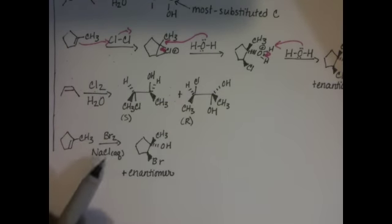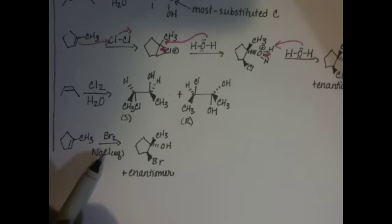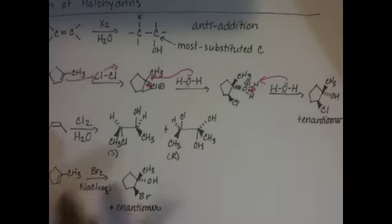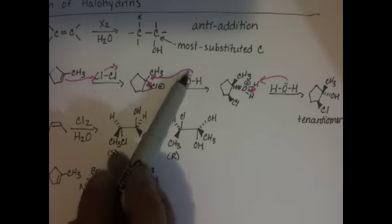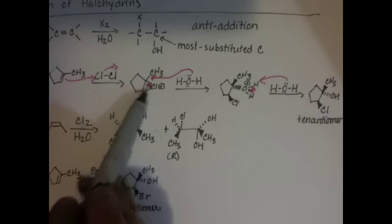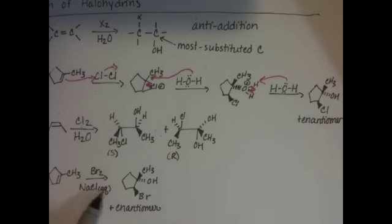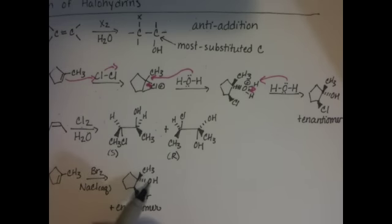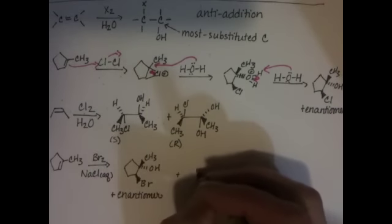When we're reacting with aqueous sodium chloride present, we can also, instead of having a water molecule opening up this intermediate, we could have this being done by a chloride ion. So instead of having an OH group in this spot, a Cl- could show up in that spot.